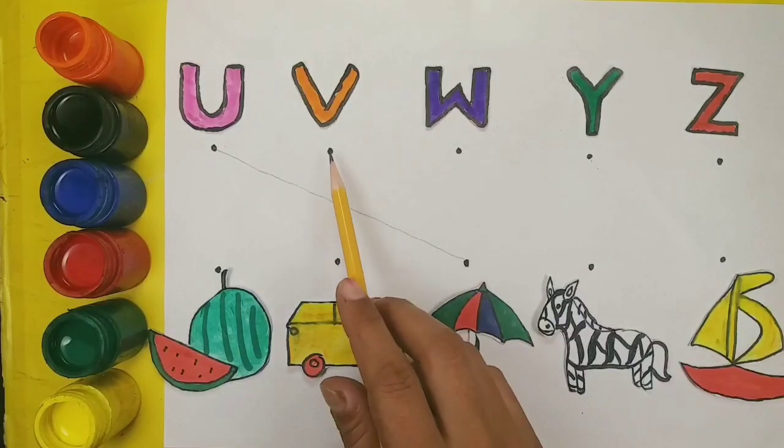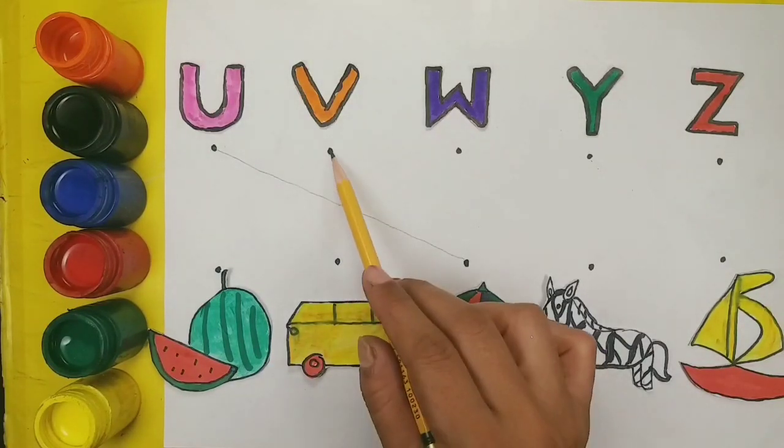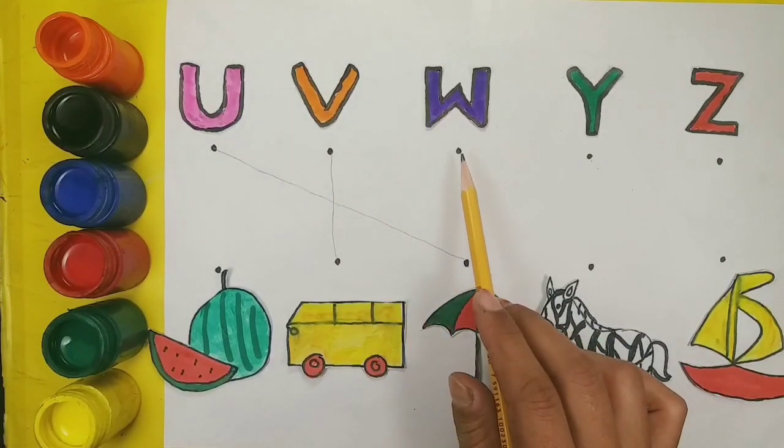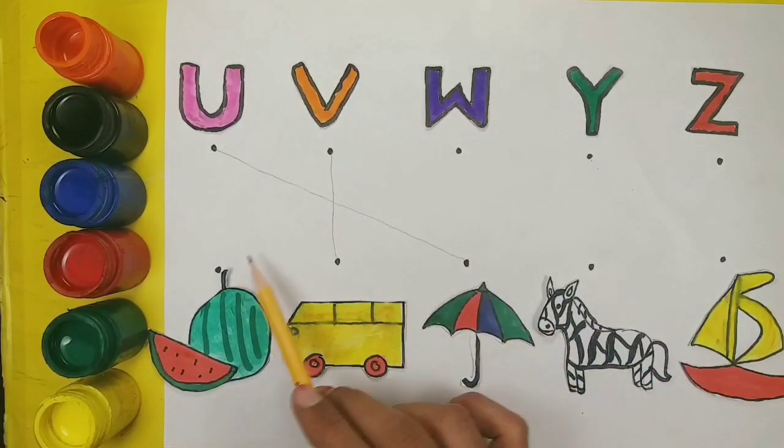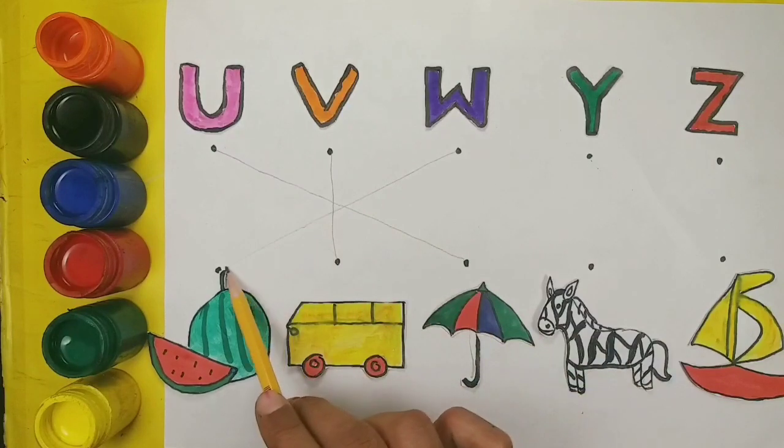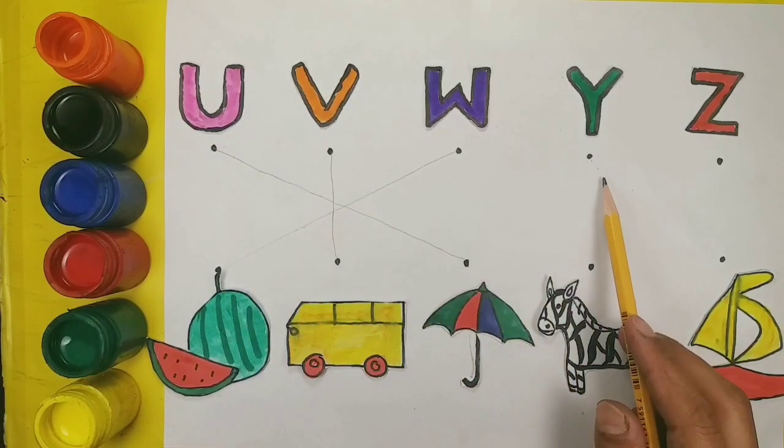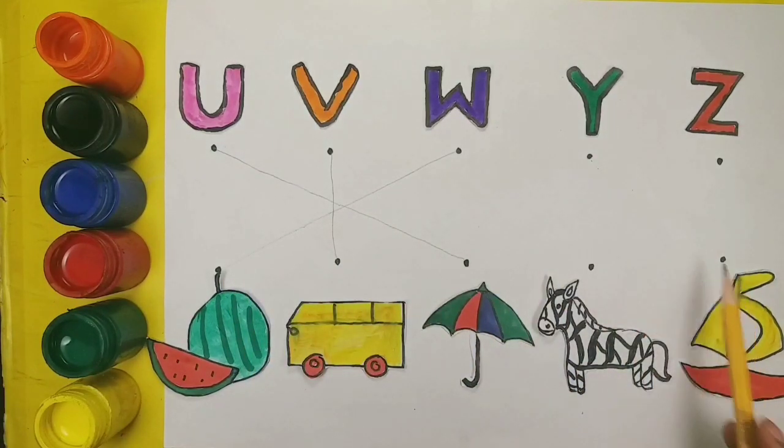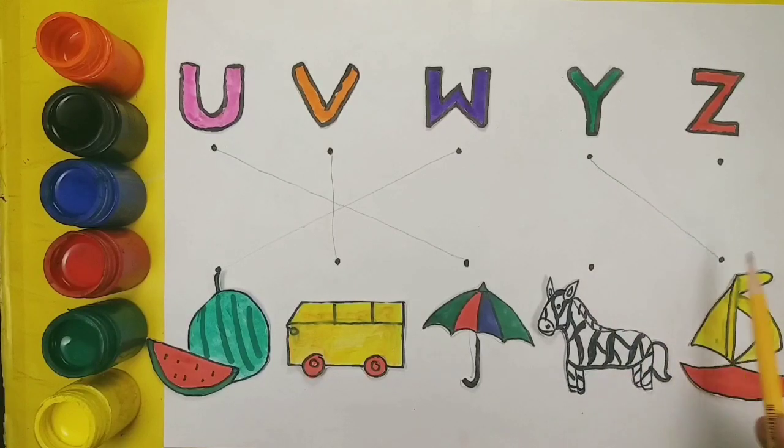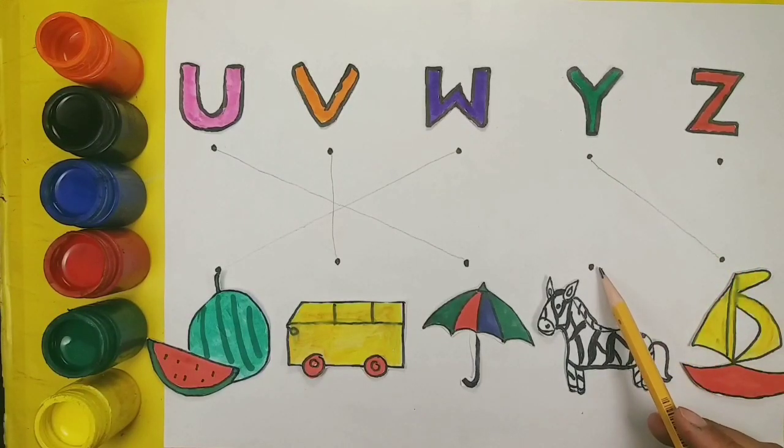V. V for vein. W. W for watermelon. Y. Y for yaach. Z. Z for zebra.